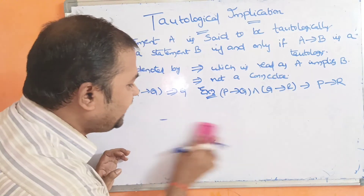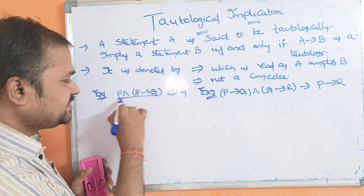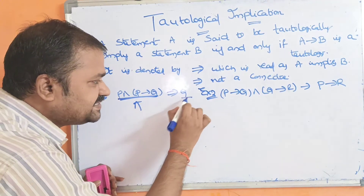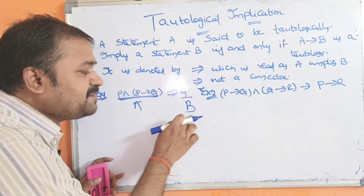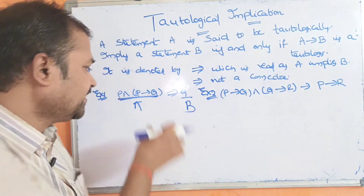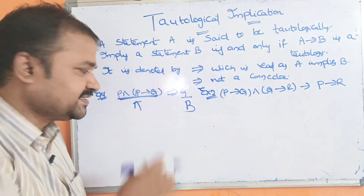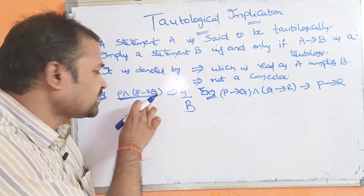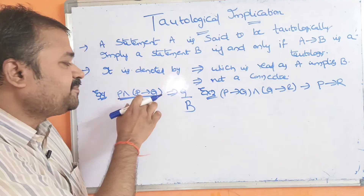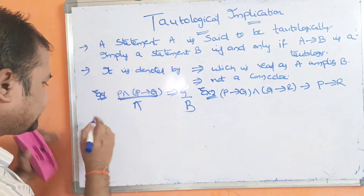So here we have A and B. The LHS is A, which is P ∧ (P→Q), and the RHS is B, which is Q. If A implies B is a tautology, then we can say that A is tautologically implied to B. So P ∧ (P→Q) is tautologically implied to Q. Let us calculate this.